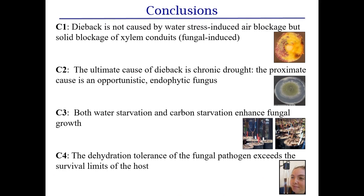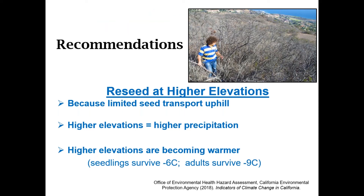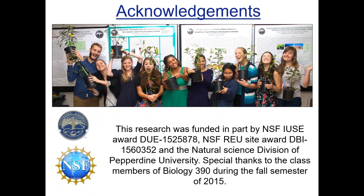In conclusion: dieback is not caused by water-stress-induced air blockage but by solid blockage of xylem conduits by fungus. The ultimate cause is chronic drought; the proximate cause is this fungal pathogen. Both water starvation and carbon starvation enhance fungal growth, and the dehydration tolerance of the fungus exceeds that of the host. Recommendation: move seeds uphill where there is more precipitation, and with warmer nights from climate change and this plant's inability to handle freezing, higher elevation is becoming more viable. This work was funded by NSF; the data was collected by undergraduate students in plant physiology.